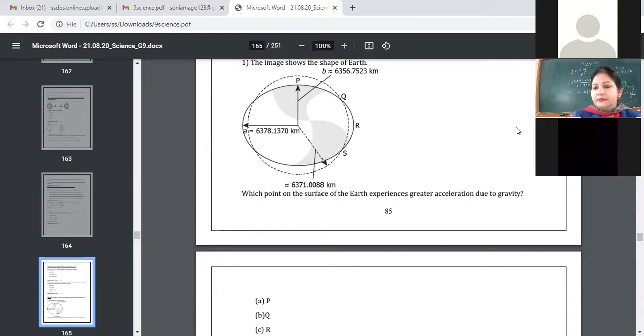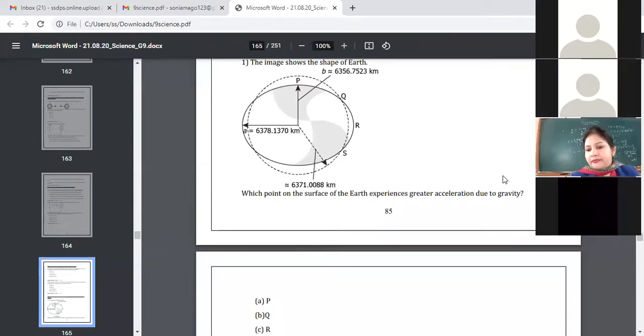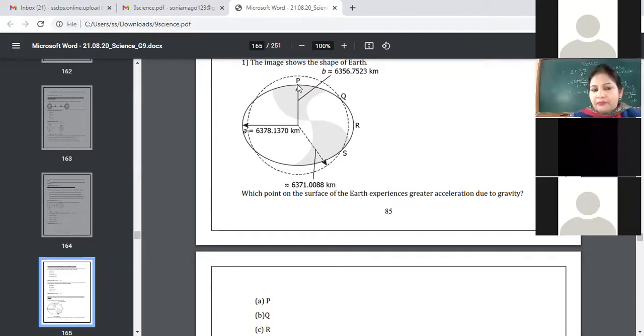All these points are given on the surface of Earth. Yes, Divya? Ma'am R. R, what is the reason? Ma'am because the length of equator is more than the length of poles. And G is GM by R square. If the length of equator is more, R is more, G will be small. We know that acceleration due to gravity at poles is more than that at equator. So can't be the answer P? Shouldn't the answer be P?